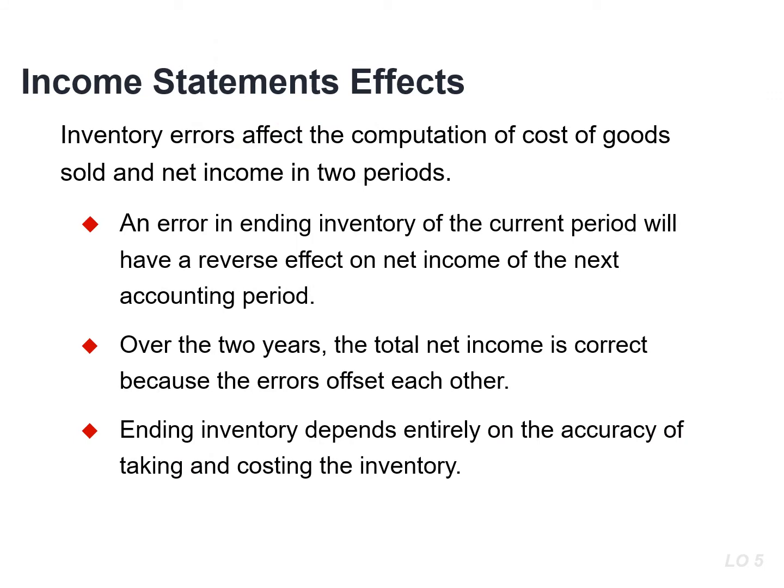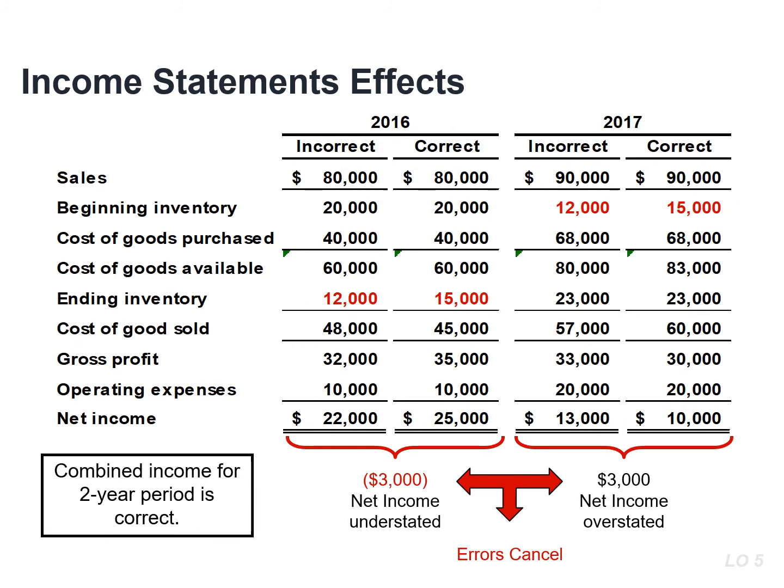An error in the ending inventory of the current period will have a reverse effect on net income in the next accounting period. Over the two years, total net income is correct because the errors offset each other. This slide illustrates that an error in the ending inventory of the current period will have a reverse effect on the net income of the next accounting period, and over the two years, total net income is correct because the errors offset each other.